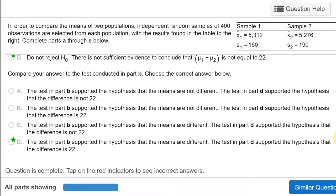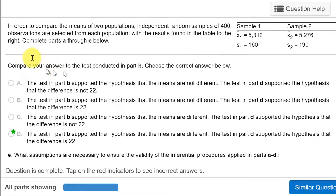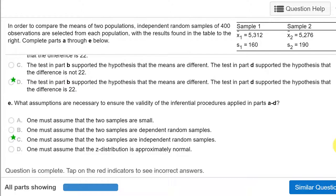Okay. The last part is compare your answer to tests conducted in Part B, choose the correct answers. And if you go through those one by one, you'll see the test in Part B supported the hypothesis because we rejected the null. And the test in Part D supported the hypothesis that the difference is 22, we failed to reject the null that the difference was 22. And again, the final part is the assumptions is that the two samples are independent random samples, which is what we've got up here. So I hope this helps.